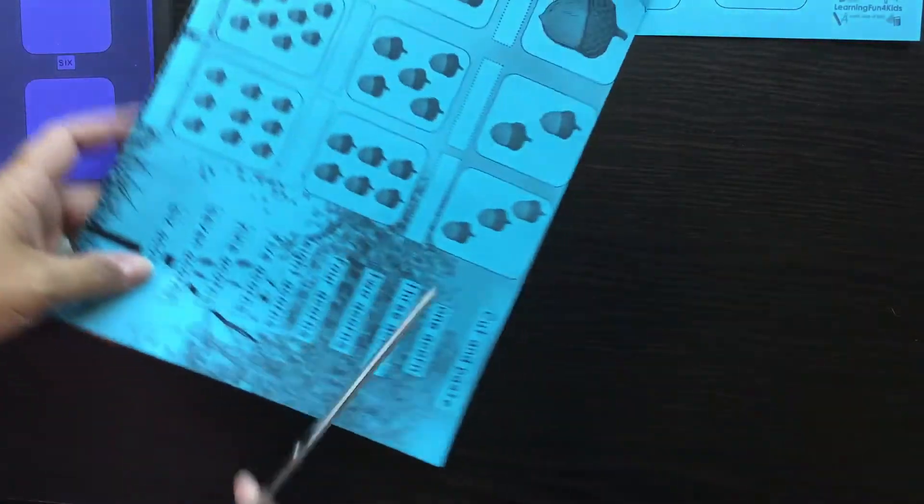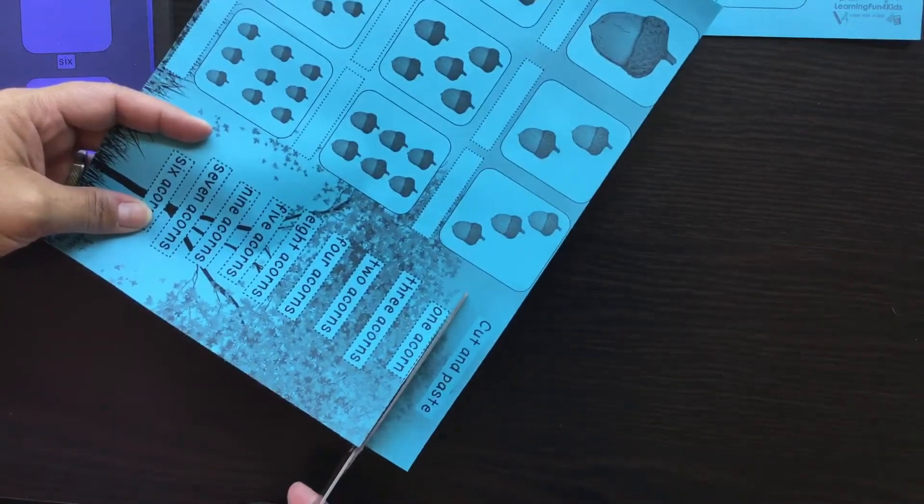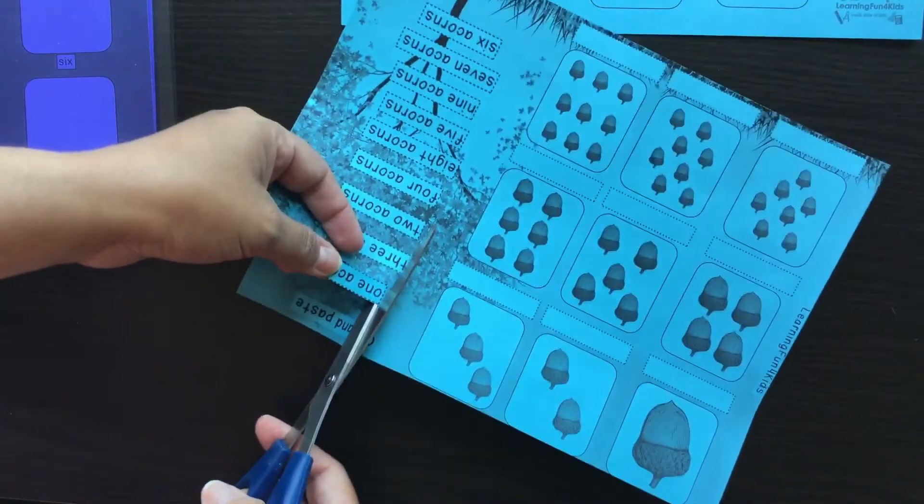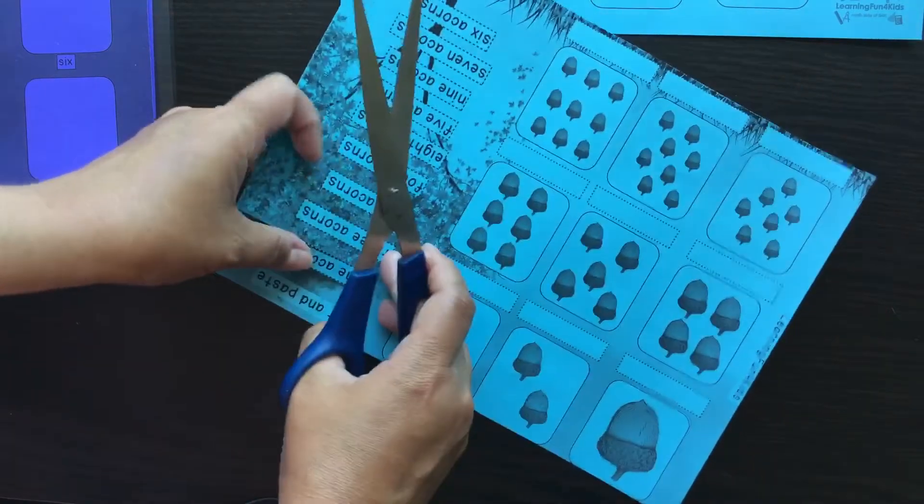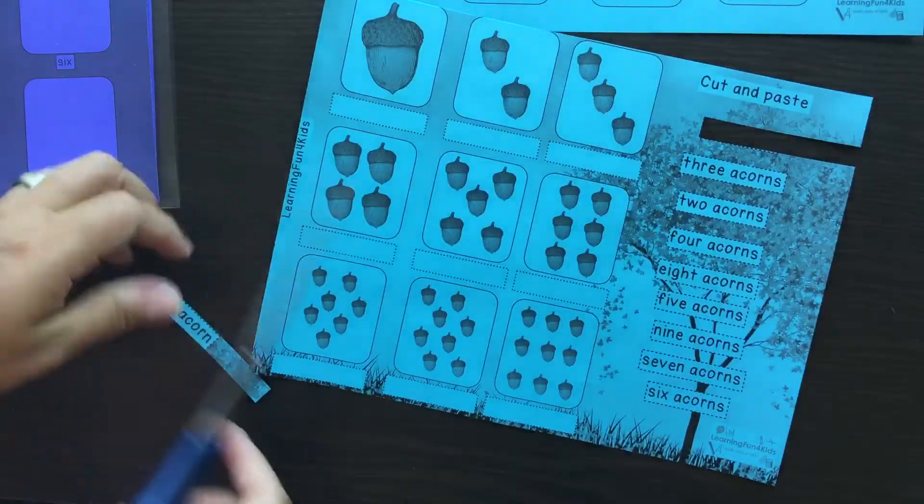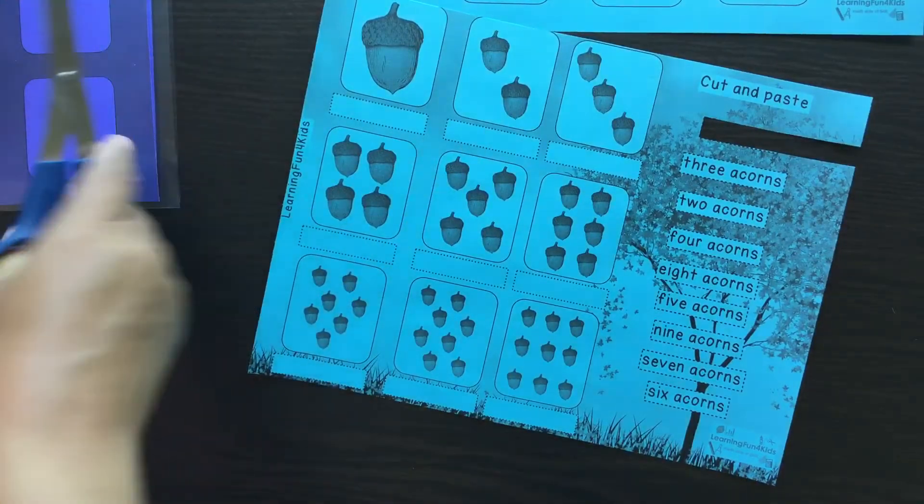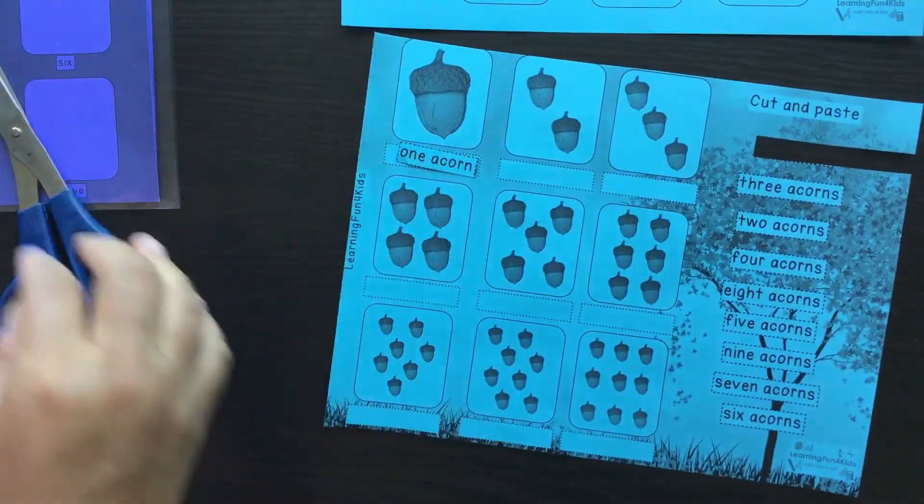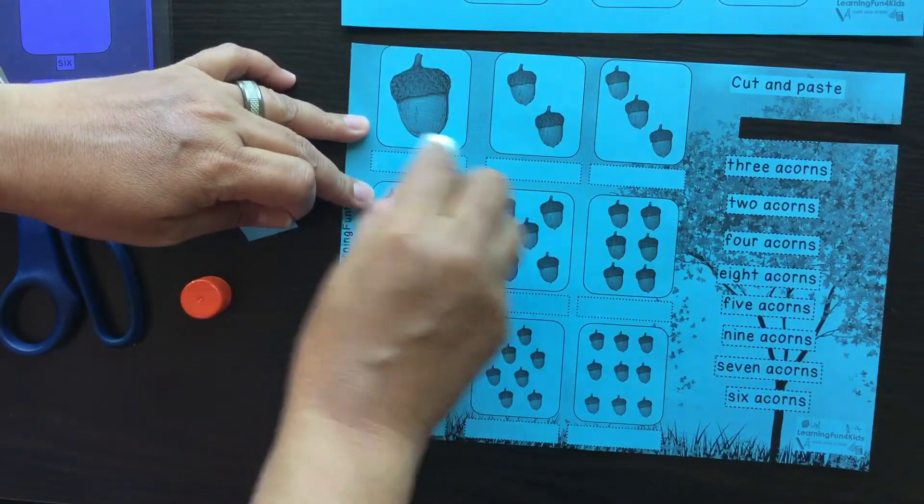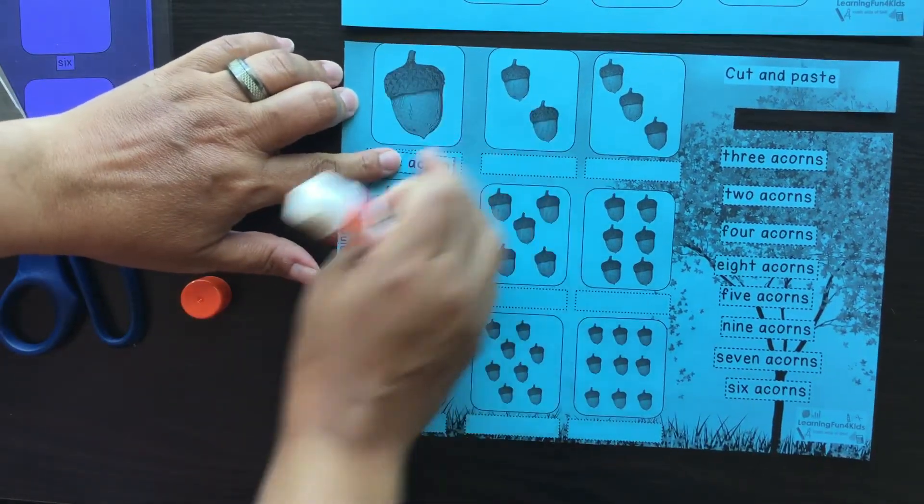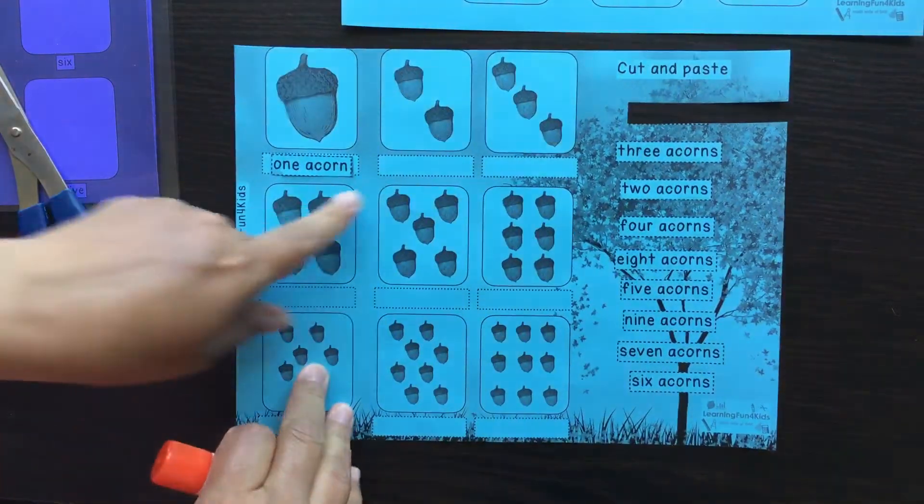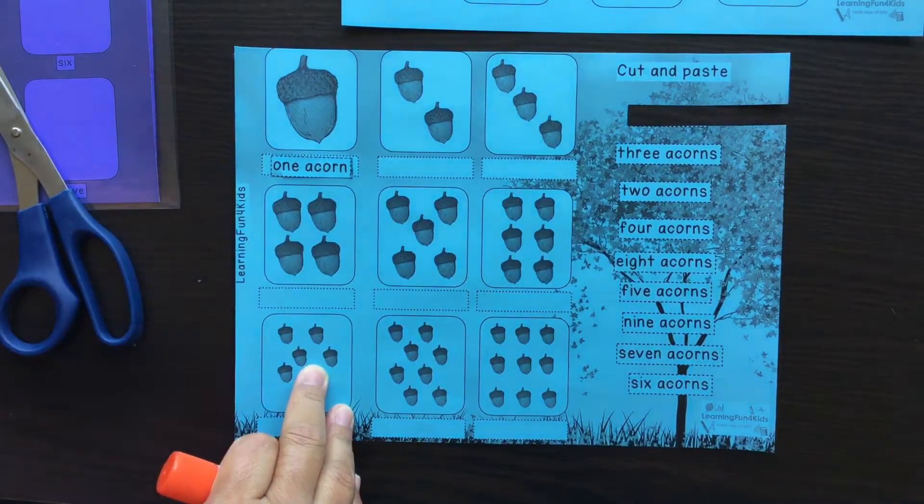If you want to, you can just go around here and then cut this section here. Let's see if I can cut this evenly. There we go. What I'm going to do is actually use my glue to paste this on there, and there you go. Okay, and then you can continue on. Where's the two acorns? Two acorns, and then you will paste it on here.